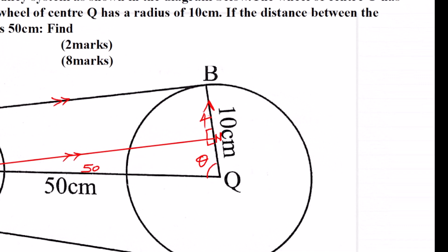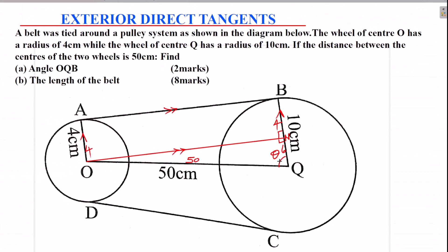Now, if that is 4 cm — look at BQ, which is the radius — and if BN is 4 cm, then NQ will be 6 so that you get BQ as 10 cm. So that is the length NQ as 6. Now you can see we are forming a right-angle triangle. OQN is a right-angle triangle. You're going to use cosine to find that angle.